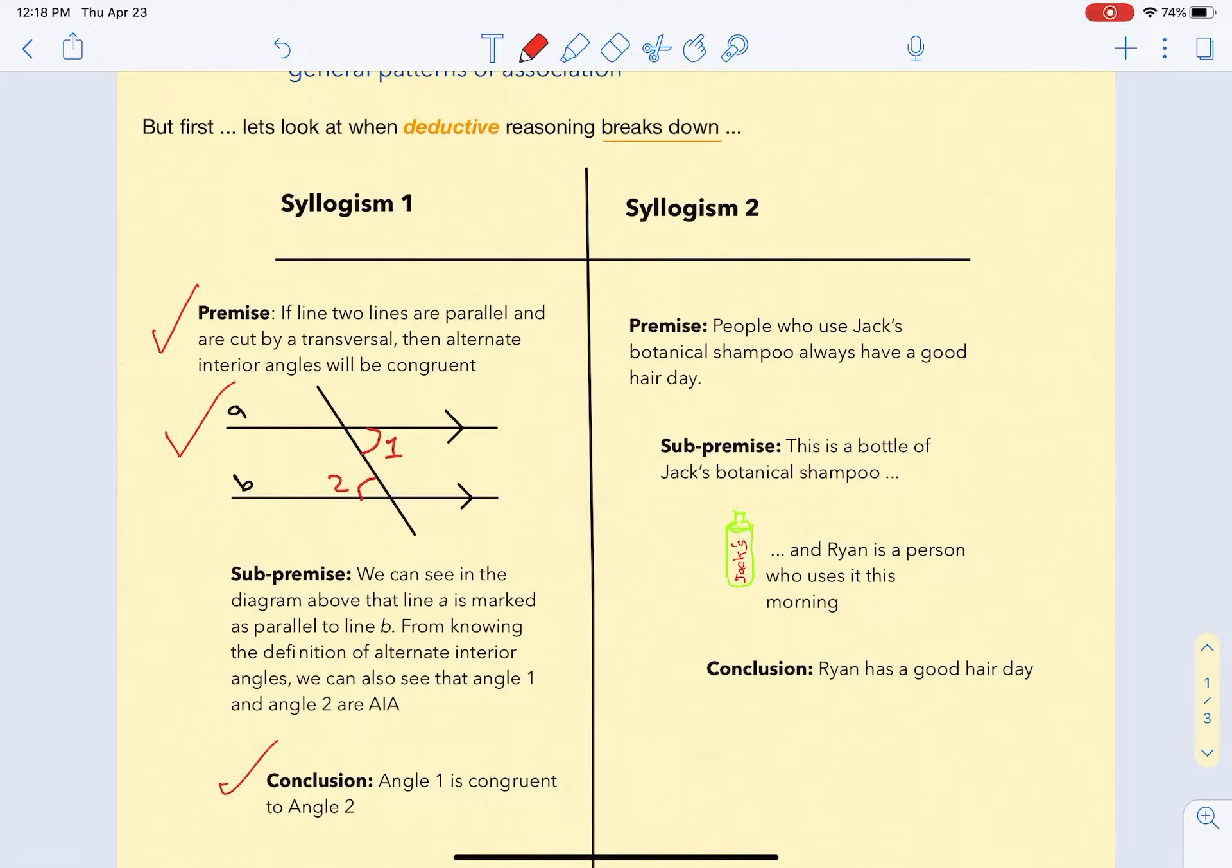Okay, the second syllogism works like this. The premise: people who use Jack's Botanical Shampoo always have a good hair day. The sub-premise is that this is a bottle of Jack's Botanical Shampoo, and Ryan is a person who uses it this morning. The conclusion is that Ryan has a good hair day.